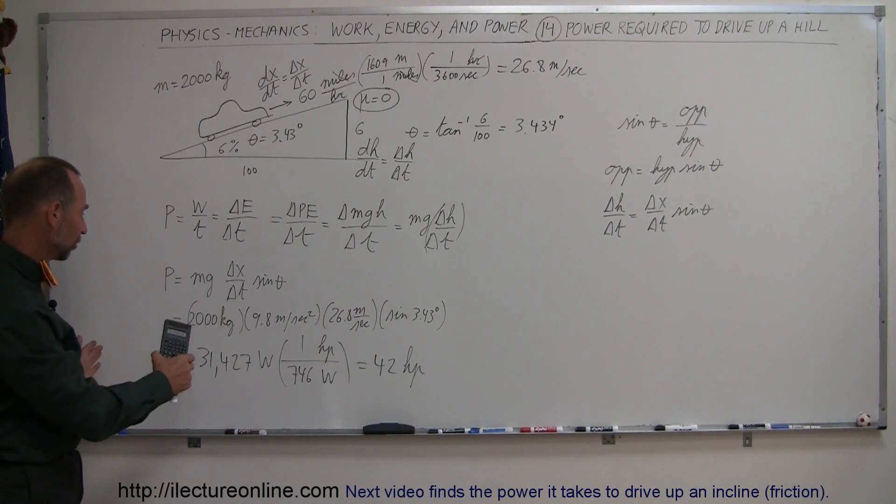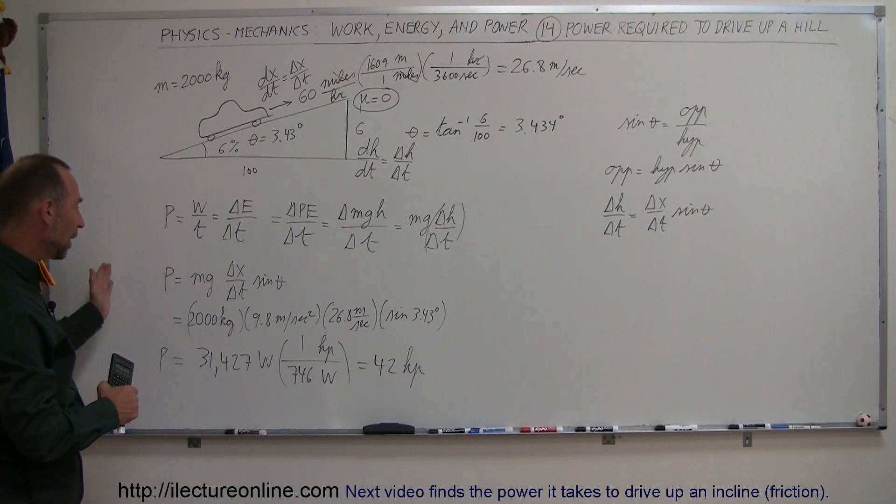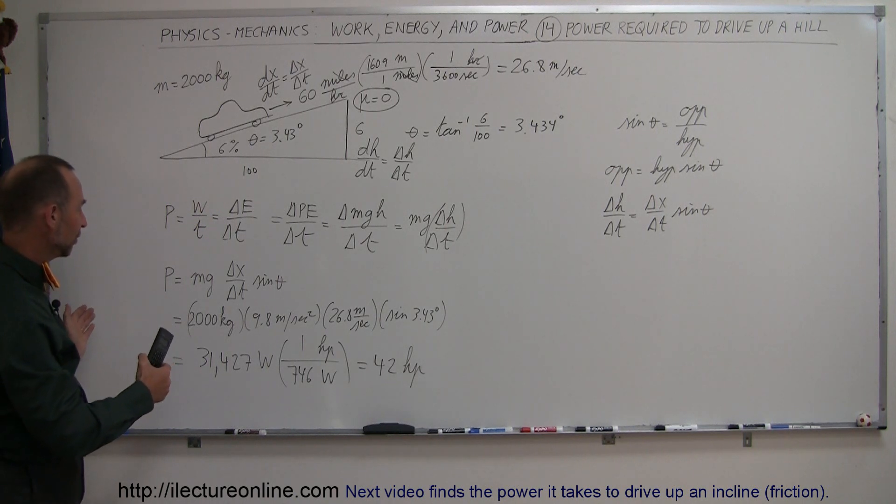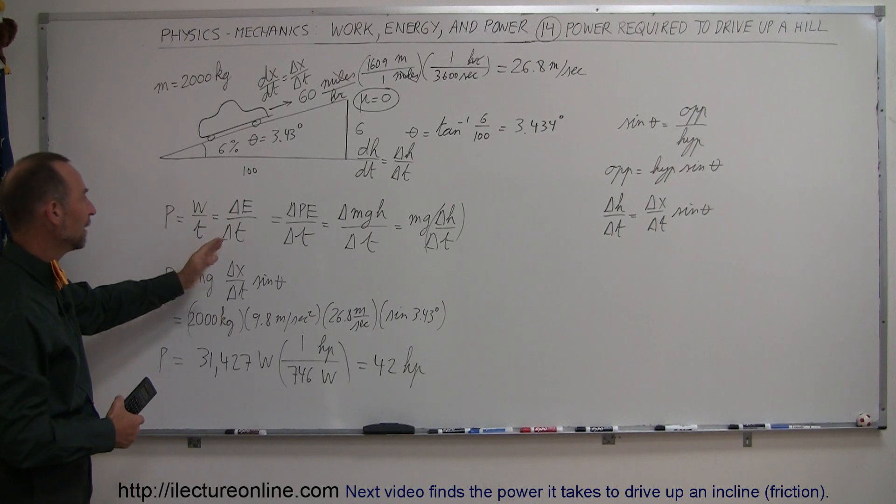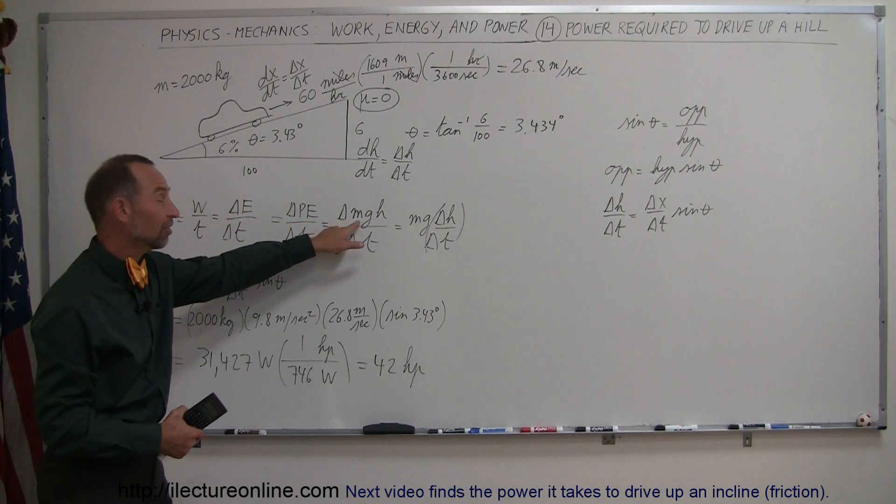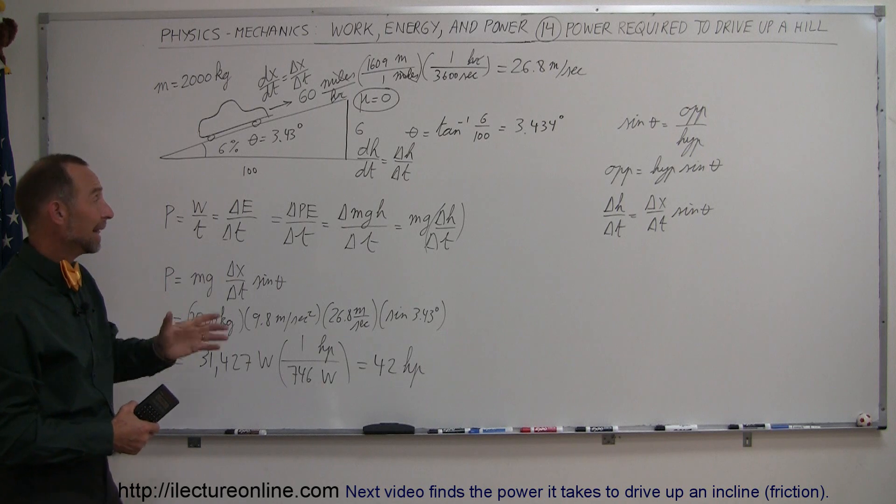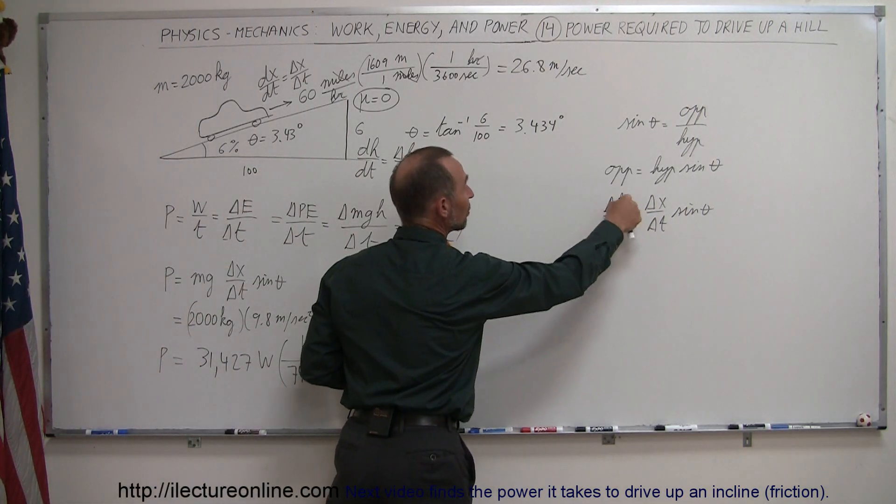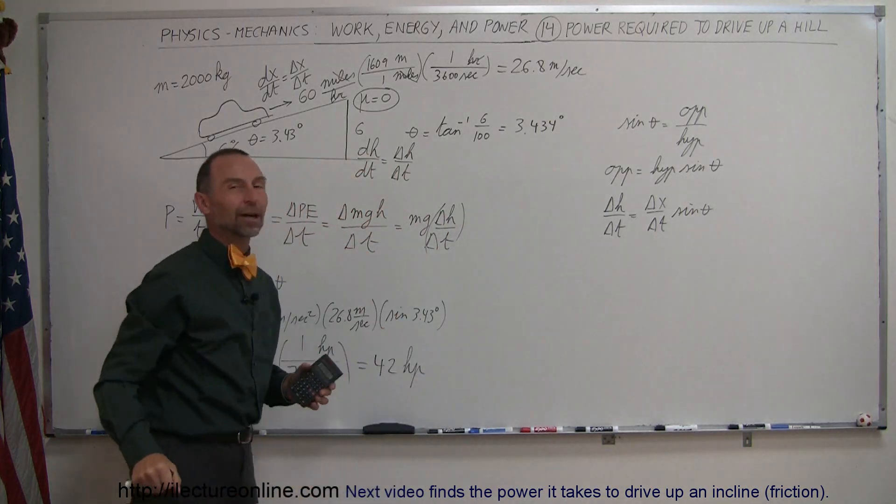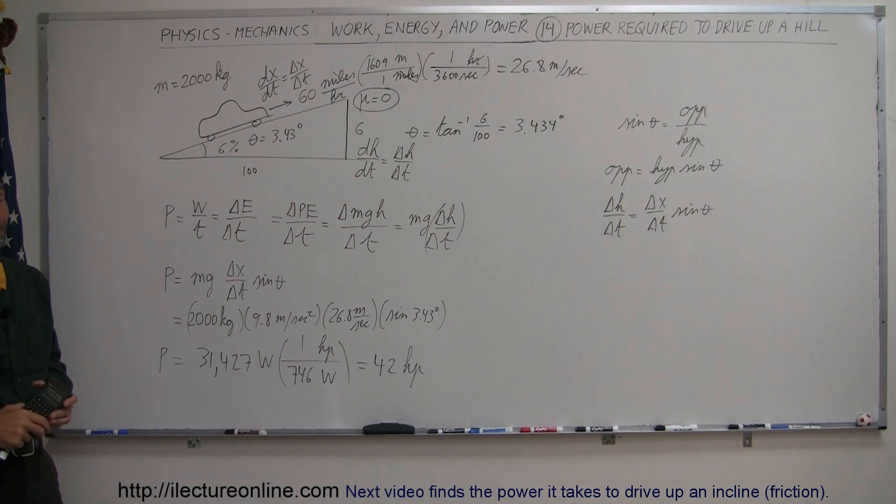But for our sake here, this is a good problem to start with, ignoring friction, ignoring efficiency, and simply saying that the power is equal to work over time or change in energy over time. And then we have to define what that change in energy is, which in this case is the change in potential energy. And then we have to convert from the delta X delta T to delta H delta T so it can work out the problem. And that's how you do that. Thank you.